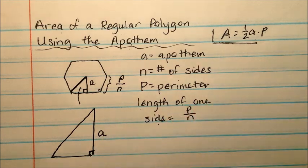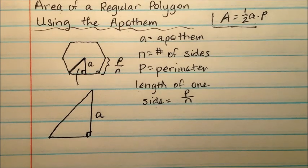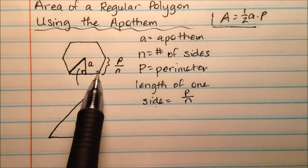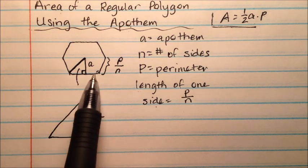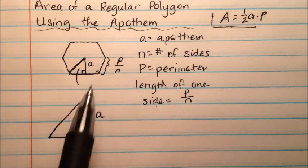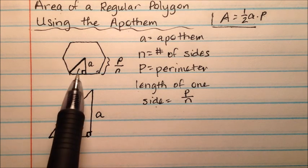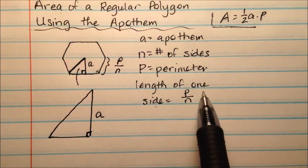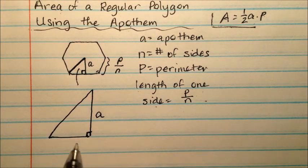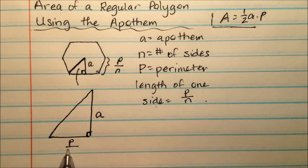I know this is my apothem. And this whole side is P divided by N. But the base of my right triangle, just this rascal is going to be half of that. So I could take that and times it by a half if I wanted to. So it would be P over 2N.